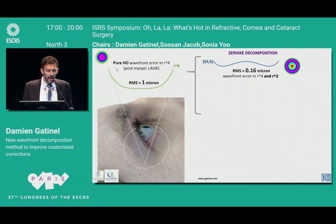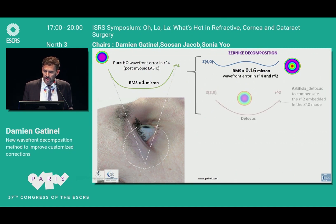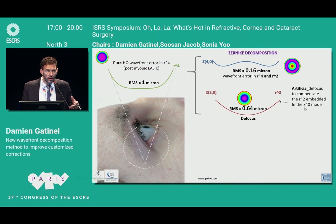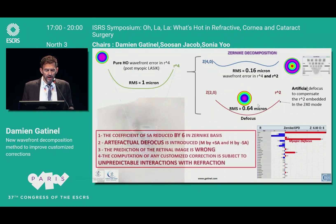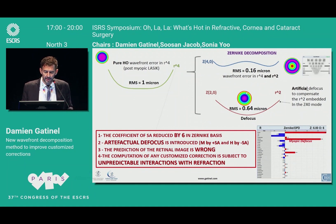The typical wavefront of a patient with halos is flat in the center and the problem is in the periphery. But with Zernike, because of the arc shape of the spherical aberration, some compensatory defocus is added, causing a wrong estimation — it interferes with and biases the estimation of the defocus. So it also reduces the real amount of the aberration, introducing a lot of artifact.